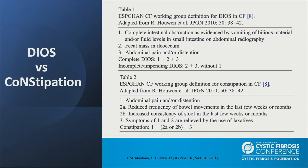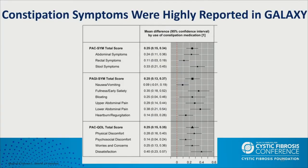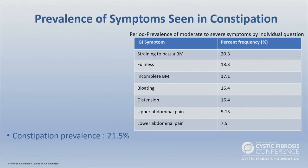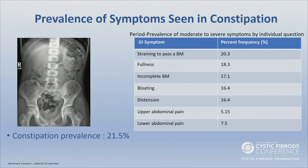Our CF population clearly endorses constipation, with the Galaxy study showing a 21% prevalence. Many individuals report straining, fullness, incomplete bowel movements, bloating, distension, and upper and lower abdominal pain. DIOS and constipation are often discussed together, but DIOS is actually very uncommon — unique to CF, and according to the registry, less than 2% prevalence. I think of constipation as more of a chronic condition that can lead to DIOS. DIOS is more acute and requires hospitalization; constipation is more subacute and chronic.